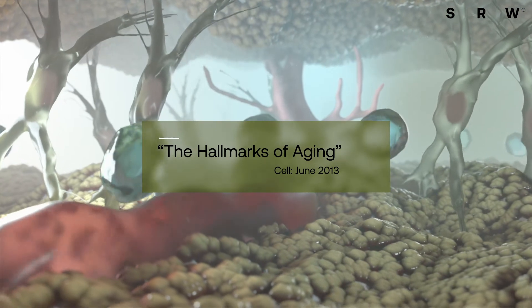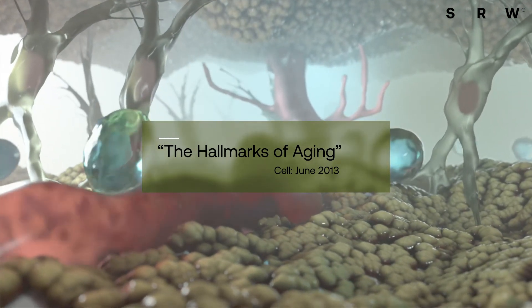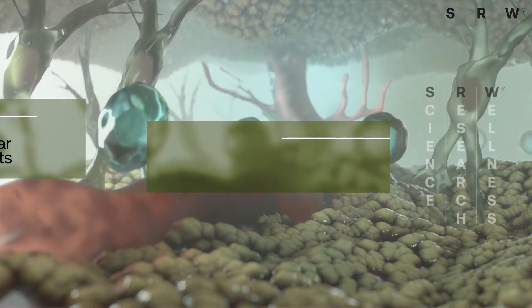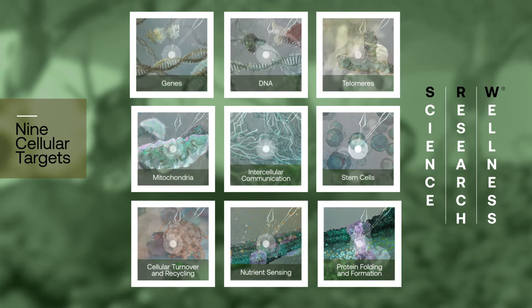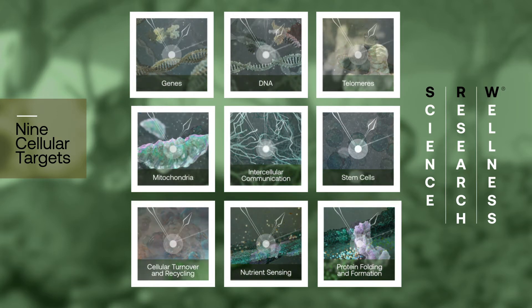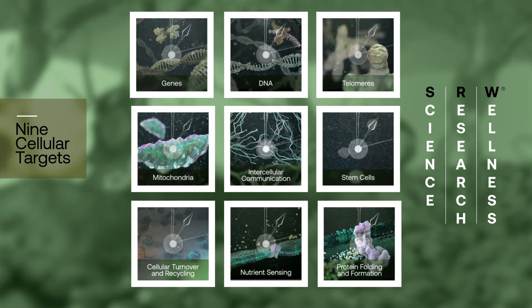In 2013, scientists published a groundbreaking research paper in leading biology journal Cell. This paper outlined the nine processes in your cells that cause aging, a significant advance that enabled researchers to interact with specific cellular targets to support healthy aging.